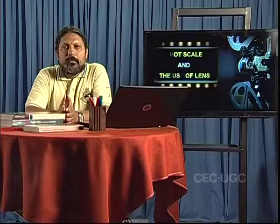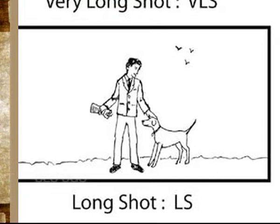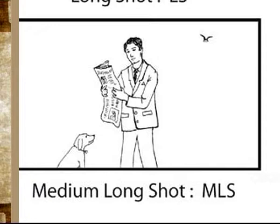A long shot is usually not used in television serials because of the intimate nature of the television medium. In a television serial, the function of the long shot is replaced by the mid-long shot, where the characters are shown from the knee upwards.